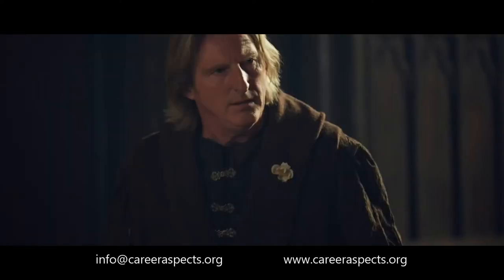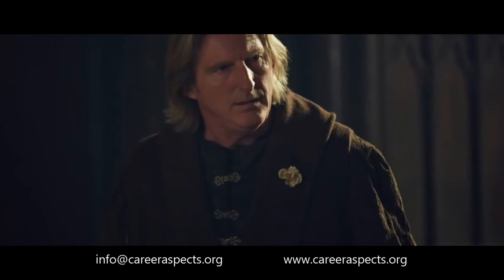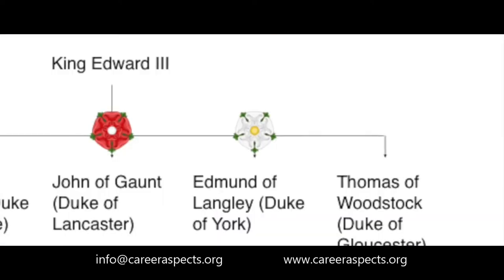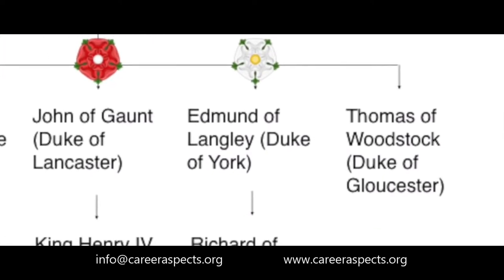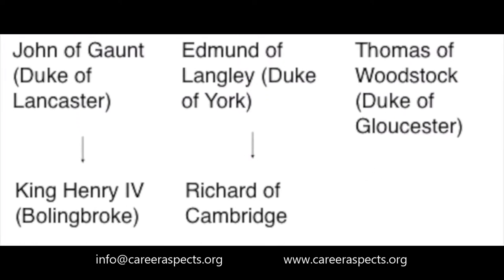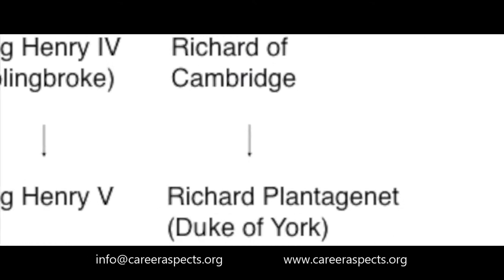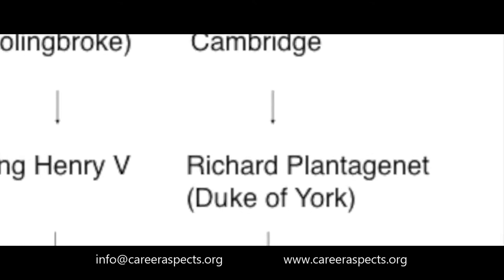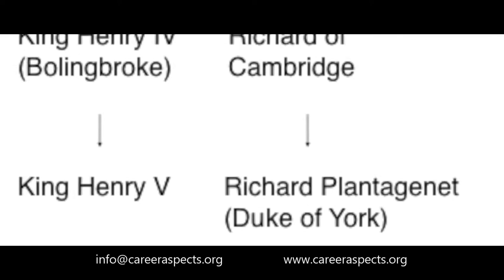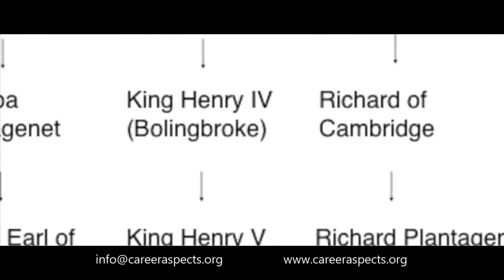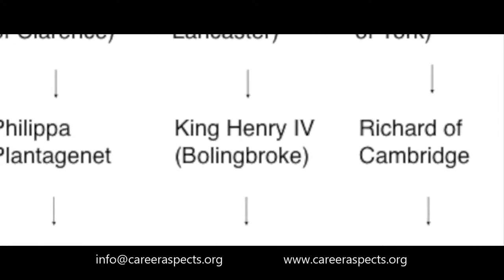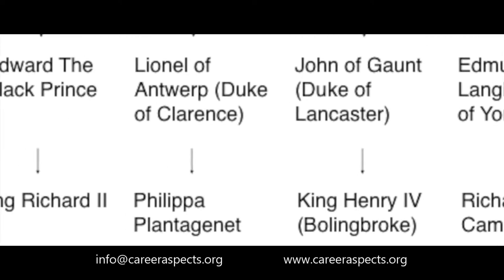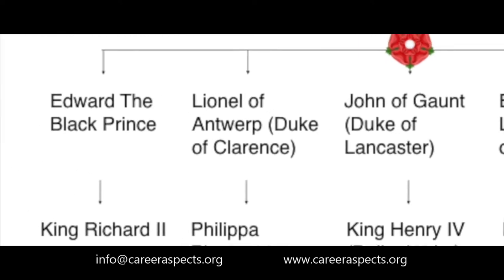Like Henry, his cousin Richard, Duke of York, was also descended from Edward III. York, however, was descended from Edward's fourth surviving son, Edmund of Langley. He had an ace up his sleeve, however, as his mother Anne Mortimer was a direct descendant of Lionel of Antwerp, King Edward's second surviving son. This made York a very strong contender for the throne, and with King Henry having no children, he was also heir apparent.